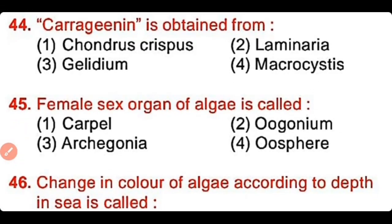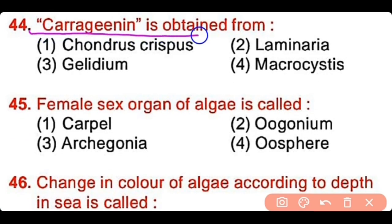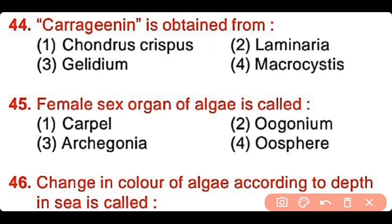Question number 44: Carrageenan is obtained from Chondrus crispus, Laminaria, Gelidium, or Macrocystis? The correct answer is option 1. Carrageenan is obtained from Chondrus crispus.